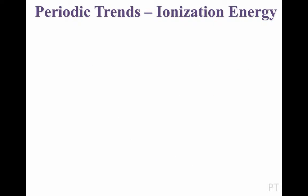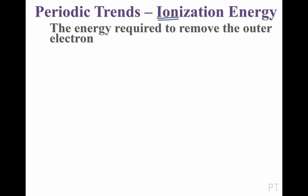The word ionize or ionization is made of two parts: ion, an atom that has lost an electron and thus become charged, and -ize, which is also found in words like socialize, legalize, or atomize. If you socialize someone, you make them social. If you legalize something, you make it legal. So when you ionize something, you turn it from an atom to an ion — specifically, you're taking away its electrons. So ionization energy is defined as the amount of energy required to remove the outer electron in an atom.